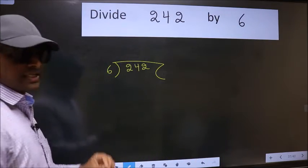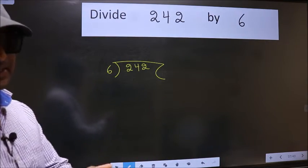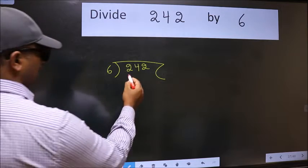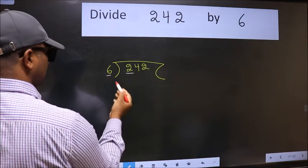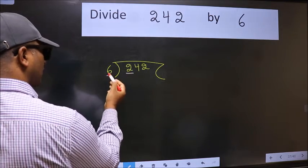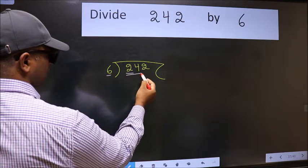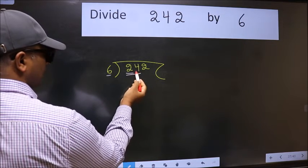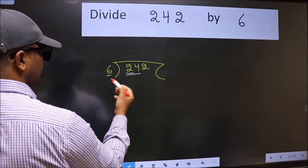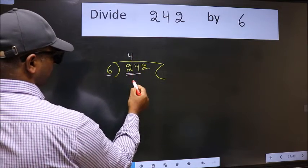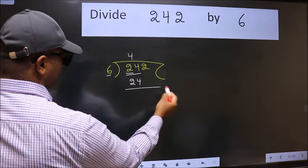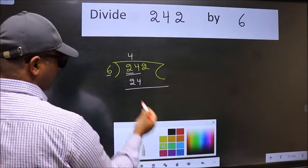This is your step 1. Next, here we have 2 and here 6. 2 is smaller than 6, so we should take two numbers: 24. When do we get 24 in the 6 table? 6 times 4 is 24. Now we should subtract—we get 0.